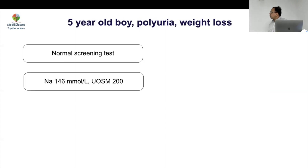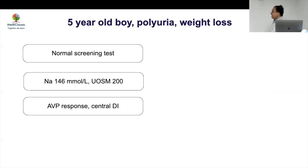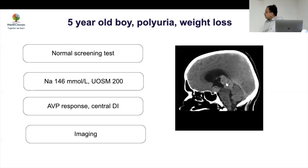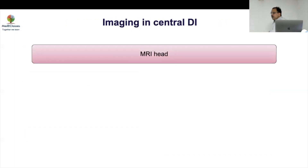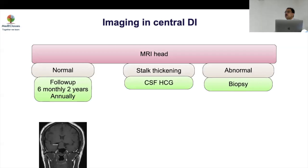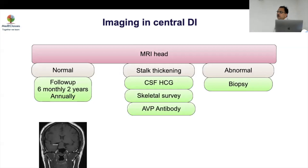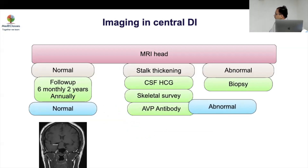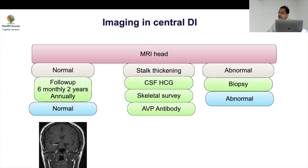Case 4: A 5-year-old boy with polyuria and weight loss. Water deprivation test: sodium 143, urine osmolality low — central DI. MRI shows stalk thickening consistent with germinoma. Germinomas may be missed in the initial phase and found later. If MRI is normal, follow up 6-monthly for 2 years, then annually. If abnormal — especially with stalk thickening — do a biopsy. Also do CSF HCG, skeletal survey for LCH, and consider AVP antibodies. If stalk thickening is more than 4 or 6 mm, biopsy is needed.